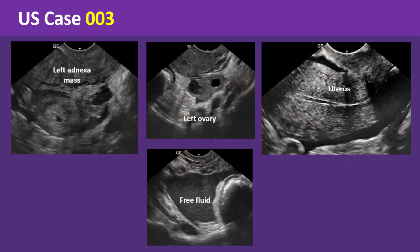Let's see the findings. There is an elongated left adnexal mass adjacent to the left ovary. This mass shows a heterogeneous echo pattern with echogenic components at its center that contains an anechoic area.